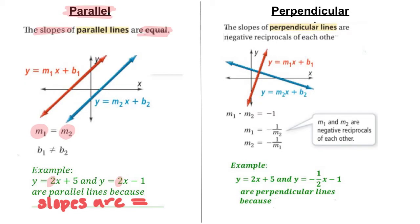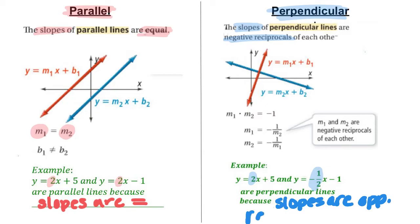However, perpendicular lines have slopes that are the negative or opposite reciprocal of one another. So for example, we would take the number and flip it and change the sign. So y equals 2x plus 5 and y equals negative 1 half x minus 1 are perpendicular lines because their slopes are opposite reciprocals.